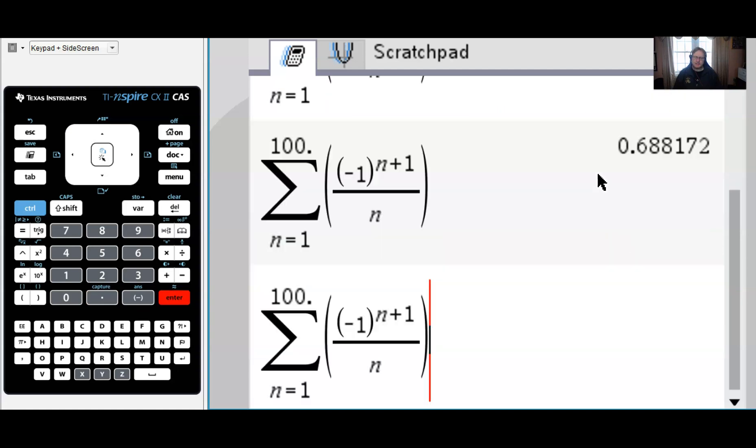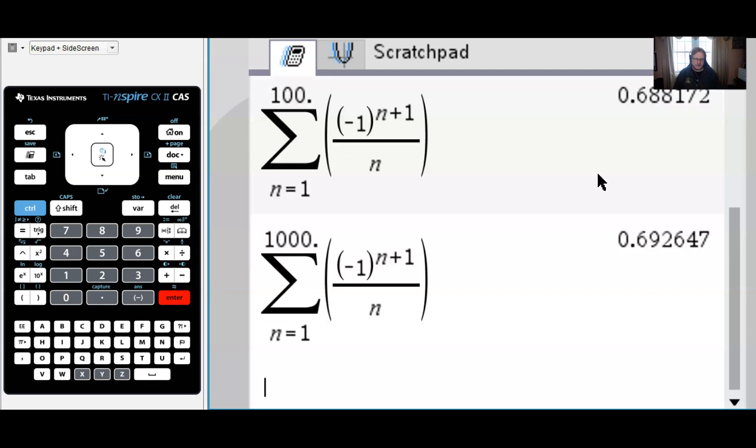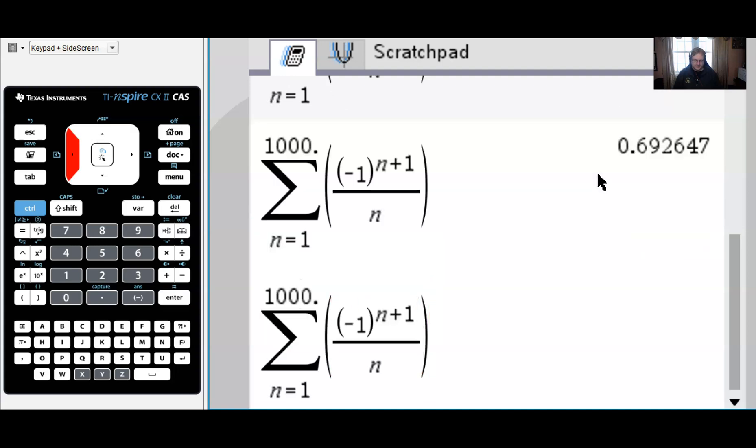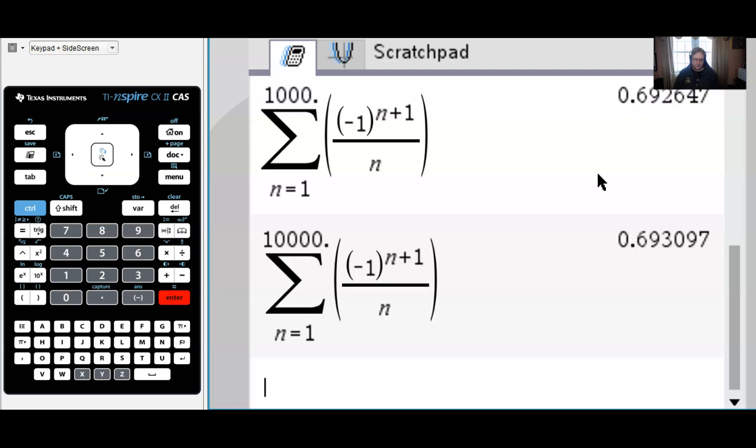How about I try this again, but maybe take it up to 1,000? That's got to be closer to infinity, right? And I get 0.692. All right. How about 10,000? 0.693.